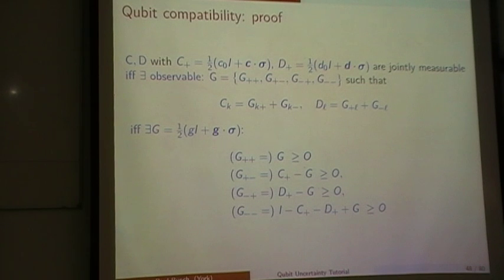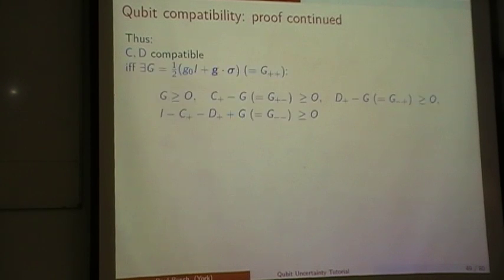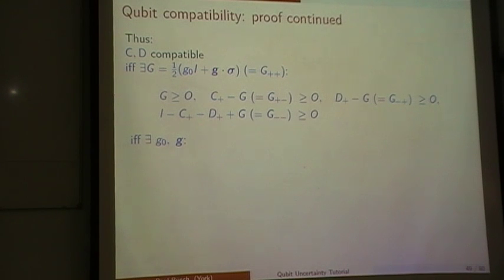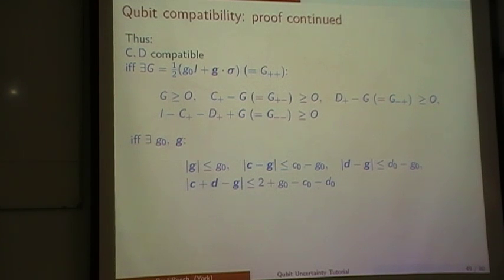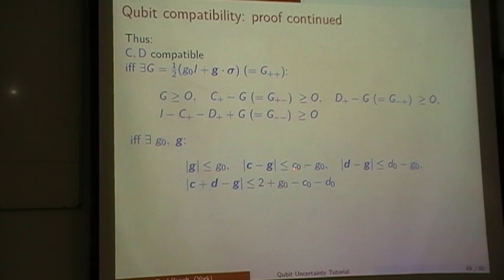In our context, that means this is the case if and only if there is a positive operator — our G — parameterized in a standard way. G++ added to its complement should give us C-plus; G++ added to G-- should give us D-plus. Taking this all together, G-- has to be the complement, and these are all the operators we look at. The requirement is they have to be positive. Once we guarantee they are positive, they add up to the identity and satisfy the marginality conditions. So we have to be concerned with fulfilling positivity of all four of them. C and D are compatible if and only if there exists a G of that form.